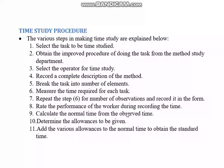After recording all observations, calculate the normal time from the observed time. Then determine the allowances to be given to the worker — since workers are human and cannot work continuously without rest, allowances are necessary. Finally, add the allowances to the normal time to obtain the standard time. We will study allowances in more detail later.